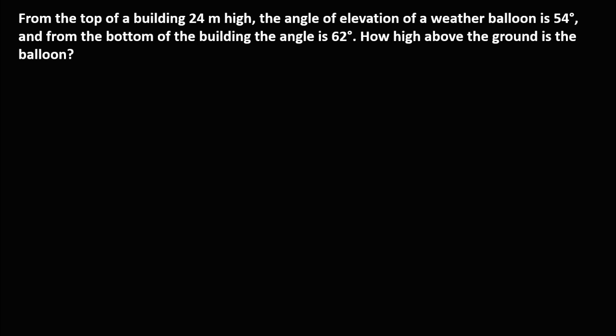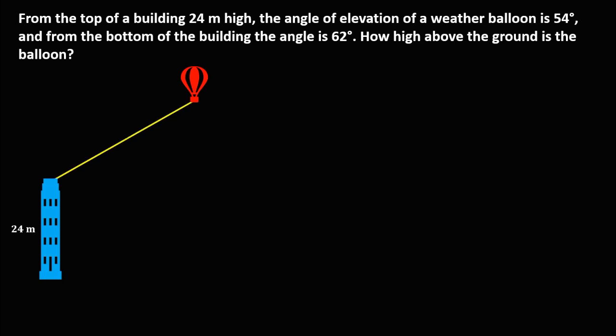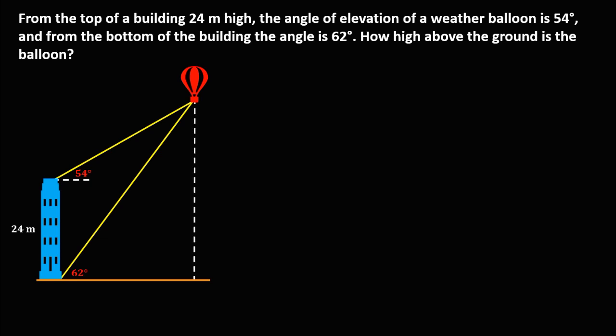For the second problem: from the top of a building that is 20 meters high, the angle of elevation of a weather balloon is 54 degrees, measured from the horizontal line. From the bottom of the building, the angle of elevation is 62 degrees, also measured from the horizontal line. Find how high above the ground the balloon is — this is the unknown.